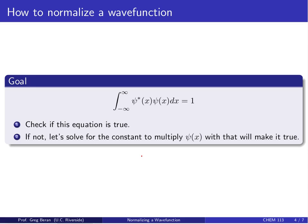So how do we actually do this in practice? The basic idea is you want to evaluate this integral. You want to take your wave function, multiply it by its complex conjugate, and integrate over all space, and ensure that that integral equals 1. We're going to look at this in two ways. First, we're going to check if this equation is true for an example.